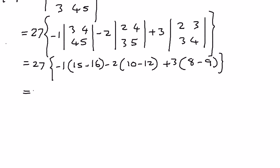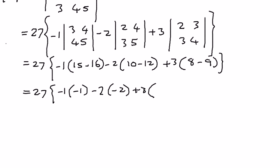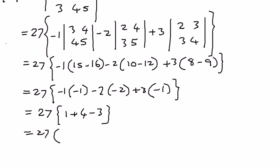Simplifying further: negative 1 times (15 − 16) is negative 1 times negative 1, which is positive 1. Negative 2 times (10 − 12) is negative 2 times negative 2, which is positive 4. Plus 3 times (8 − 9) is 3 times negative 1, which is negative 3. So we have 27 times (1 + 4 − 3), which is 27 times 2, equal to 54.